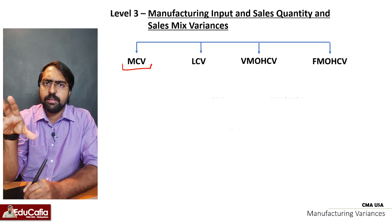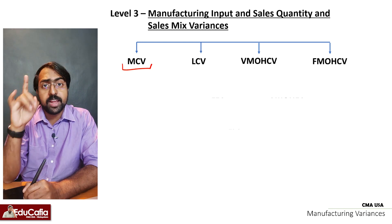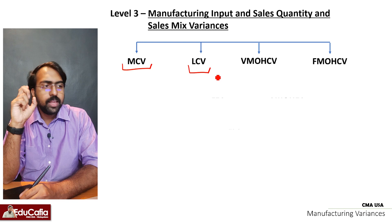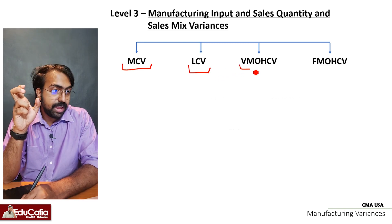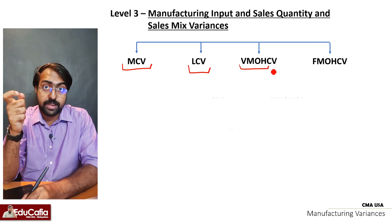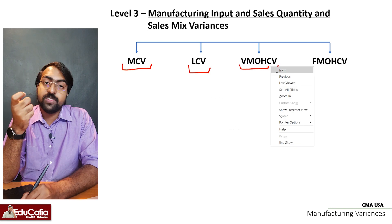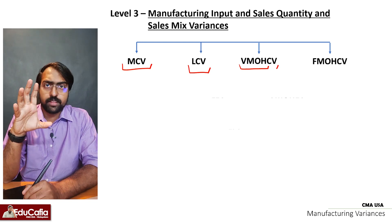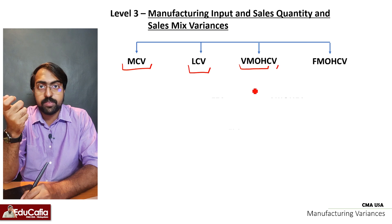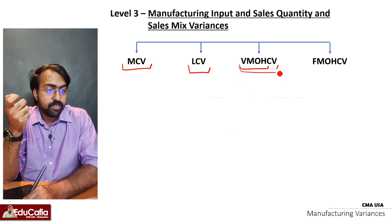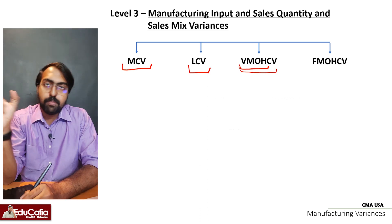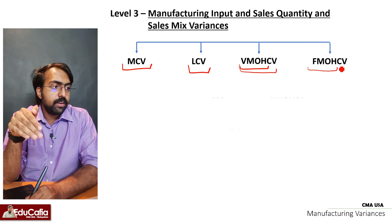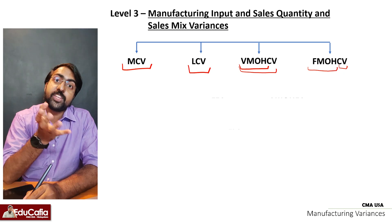We are looking at labor — there is a labor cost variance. In this way, variable manufacturing overhead — VMOH — has a cost variance. For example, variable manufacturing overhead was going to be 50 rupees, but we are going to spend 60 rupees — that 10 rupee difference is VMOH-CV, Variable Manufacturing Overhead Cost Variance. Therefore, fixed manufacturing overhead is FMOH, and that is the Cost Variance — FMOH-CV, Fixed Manufacturing Overhead Cost Variance.